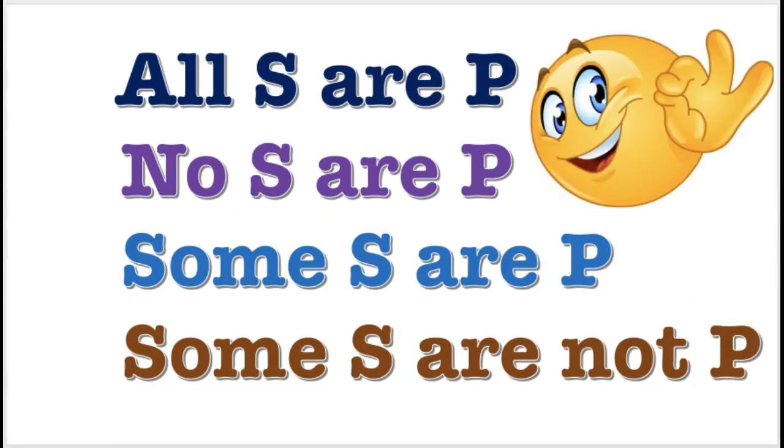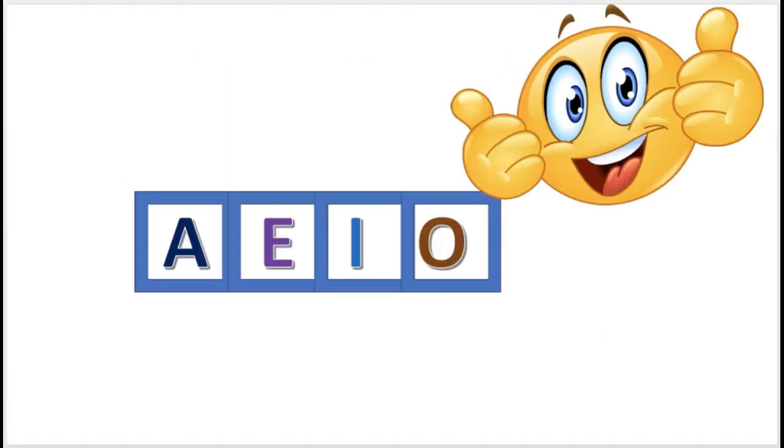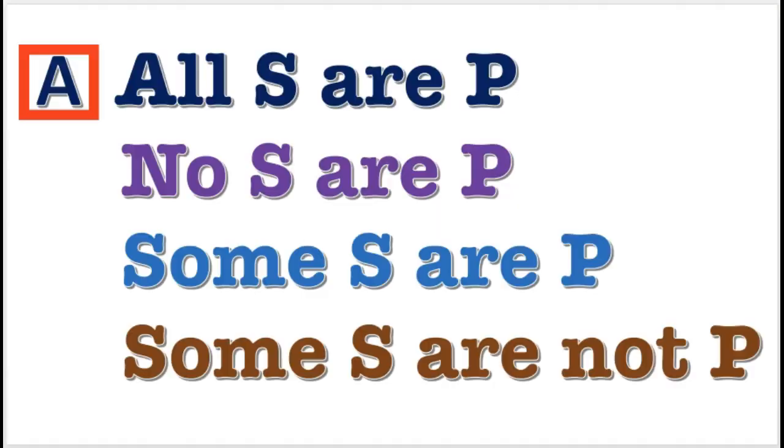Next, we will provide the names for them using the first four vowels of the alphabet: A, E, I, O.